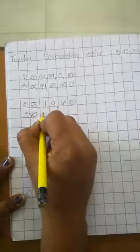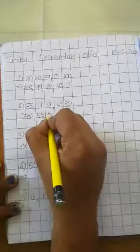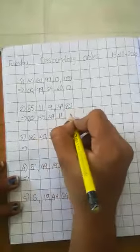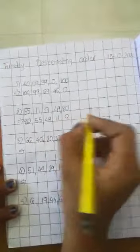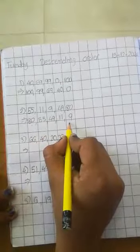80 before? 55. 55 before? 49. 49 before? 11. And 11 before? 9. 80 is bigger number and 9 is small number.